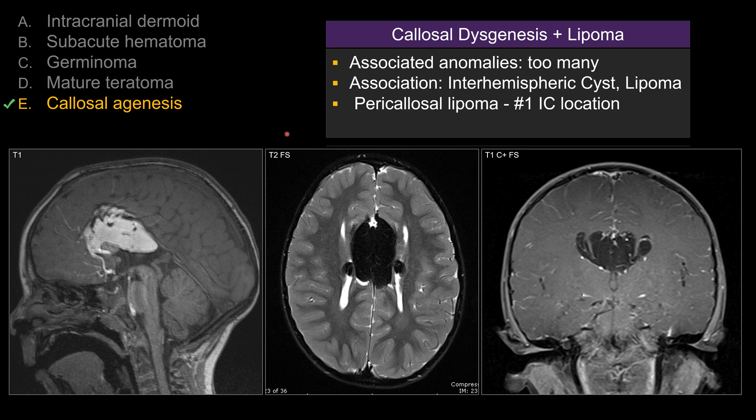Not uncommonly, with callosal dysgenesis or especially with agenesis, you will see associations with other findings such as interhemispheric cysts or sometimes with lipoma.